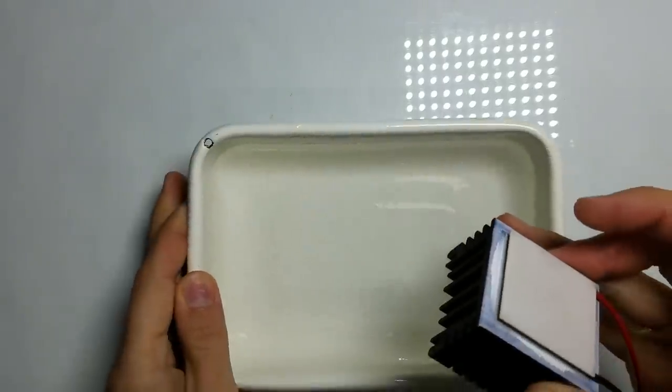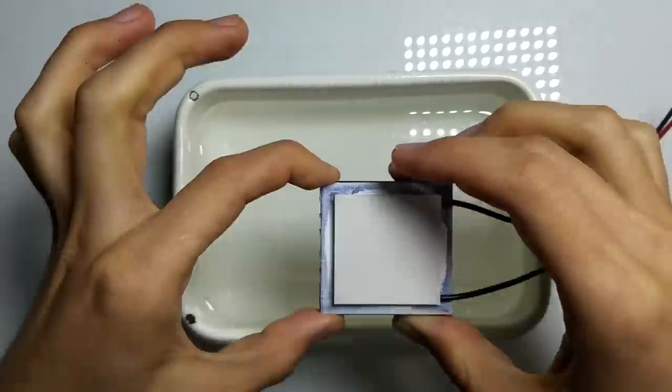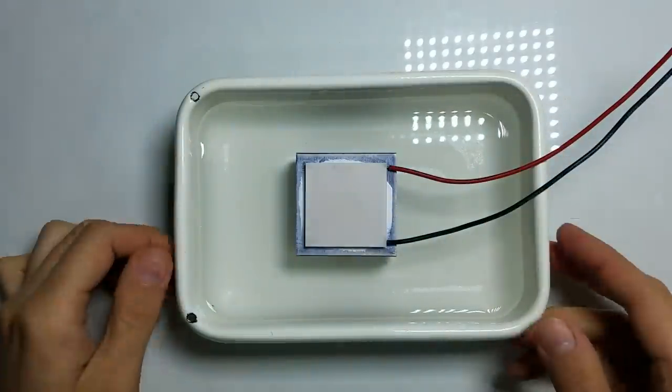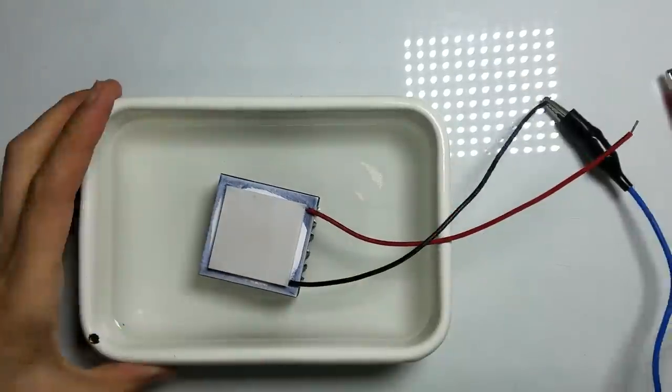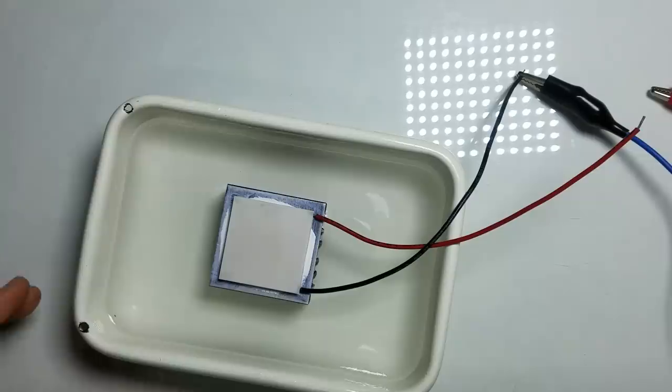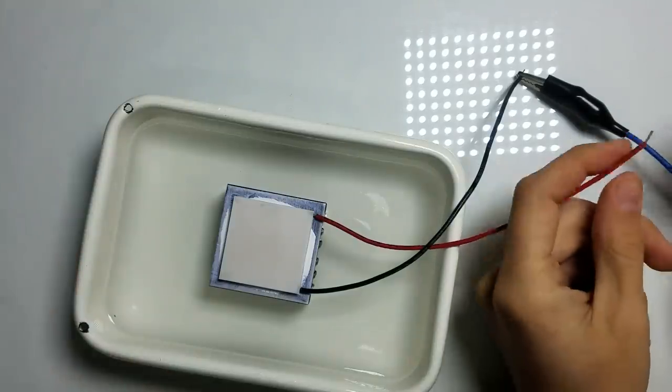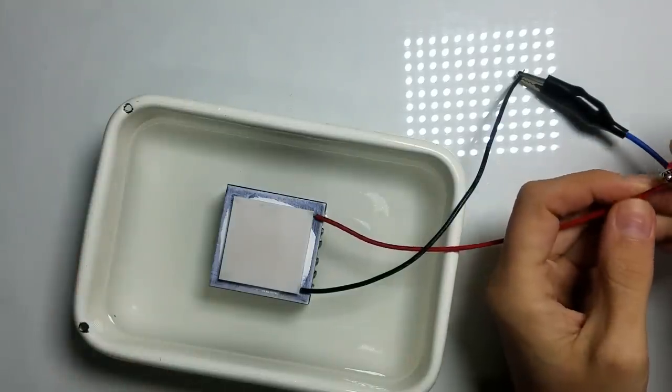For an even better heat sink cooling, I'll put it in the water. Now let's connect a 12V power supply. Now let's connect this second wire, and cooling starts.